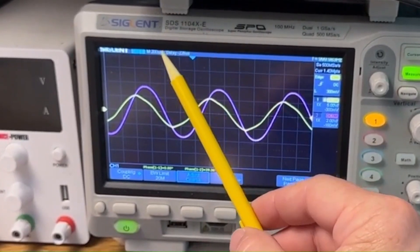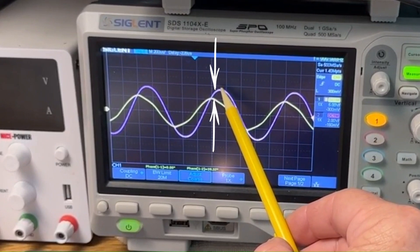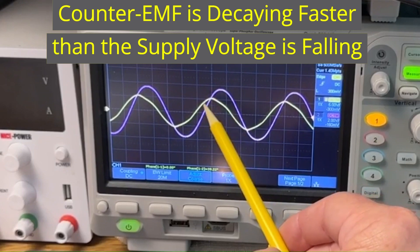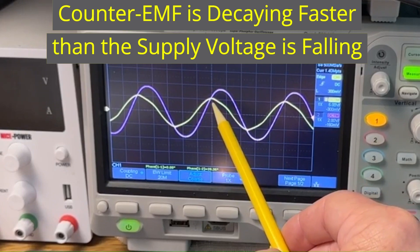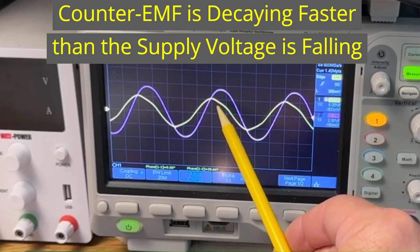Even when the supply voltage begins to drop, current can keep rising for a bit. That's because the opposing voltage from the inductor is fading faster than the supply voltage is falling. So for a short time, there's still enough internal push to keep the current increasing, even though the supply voltage is decreasing.